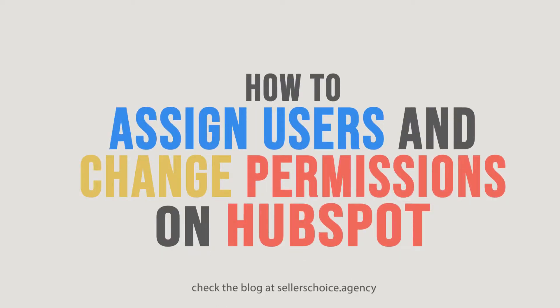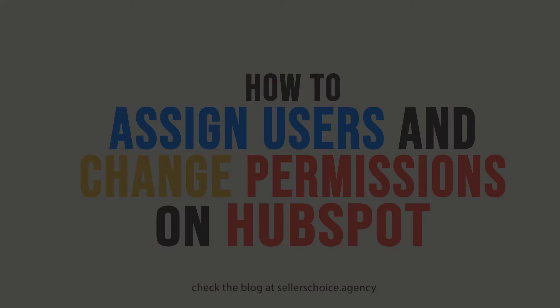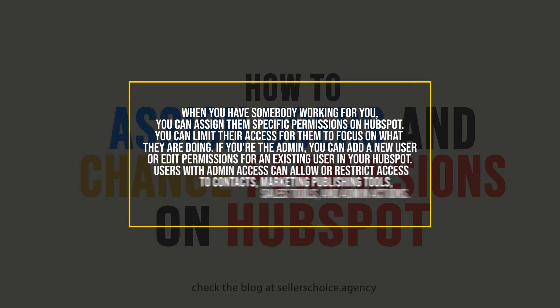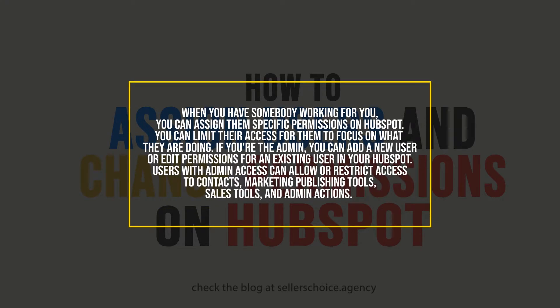There are things that we can't do alone. Like the saying goes, no man is an island — you can't be an expert at everything, that is why you need help from others. If that's the case, you need to hire somebody who would do the job for you. When you have somebody working for you, you can assign them specific permissions on HubSpot and limit their access for them to focus on what they're doing.